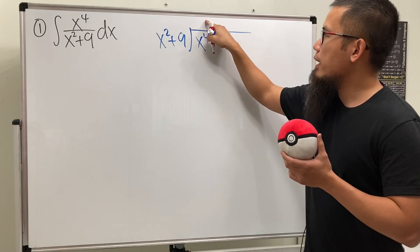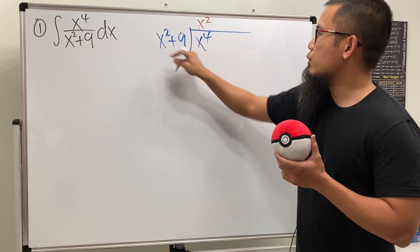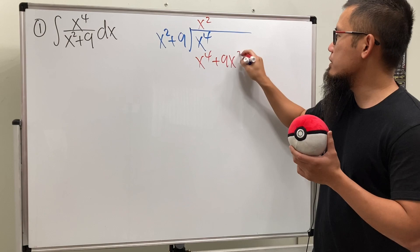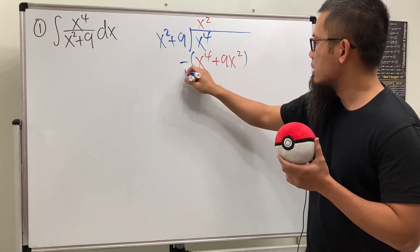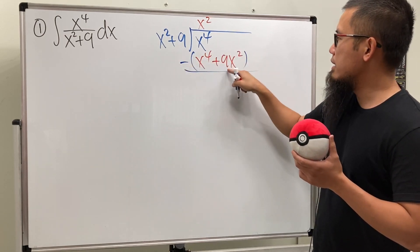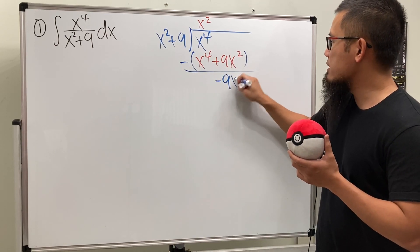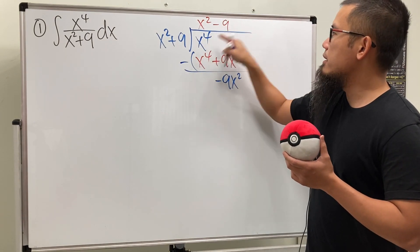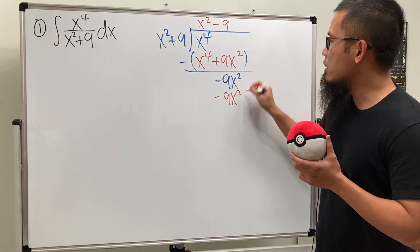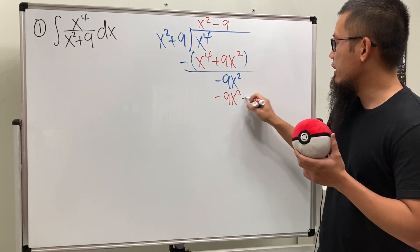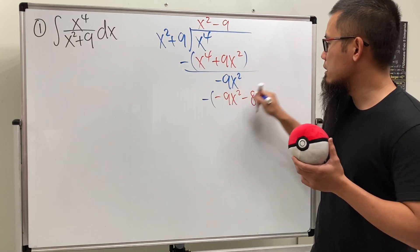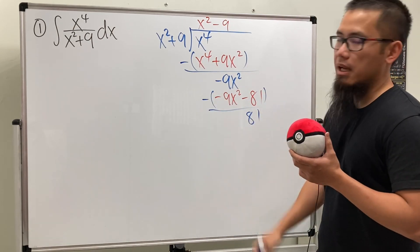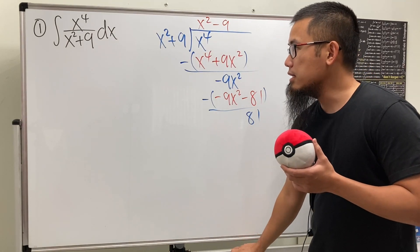We know x squared times x squared gives us x to the fourth power. Remember to multiply, giving us plus nine x squared, and we subtract — zero minus that is going to be negative nine x squared. We continue: minus nine times x squared gives negative nine x squared, and this times nine gives negative 81. We subtract again — zero and then negative negative gives us positive 81.